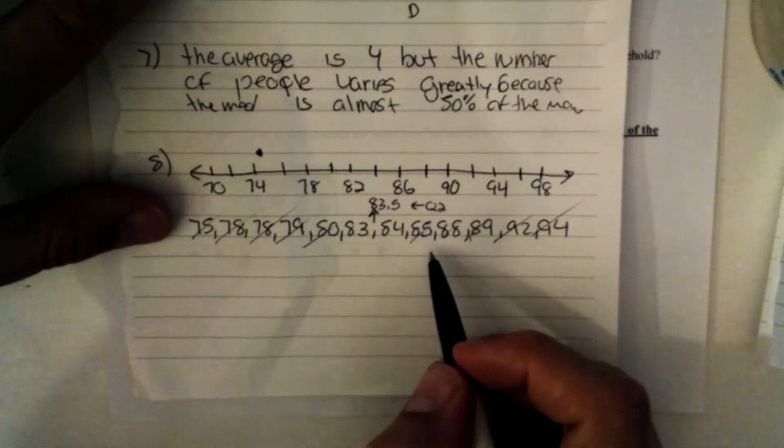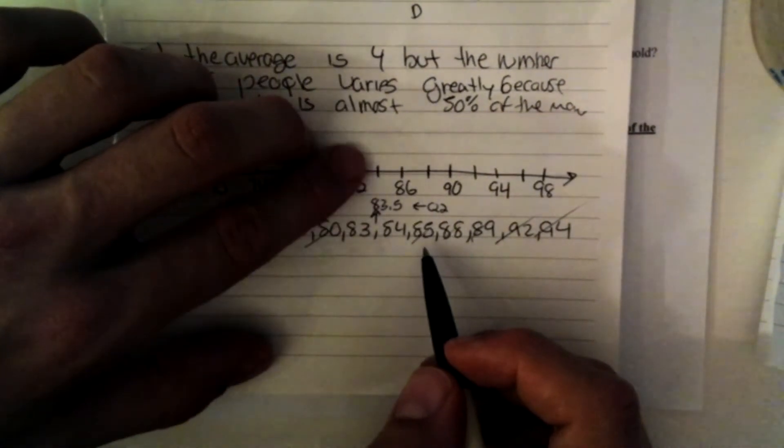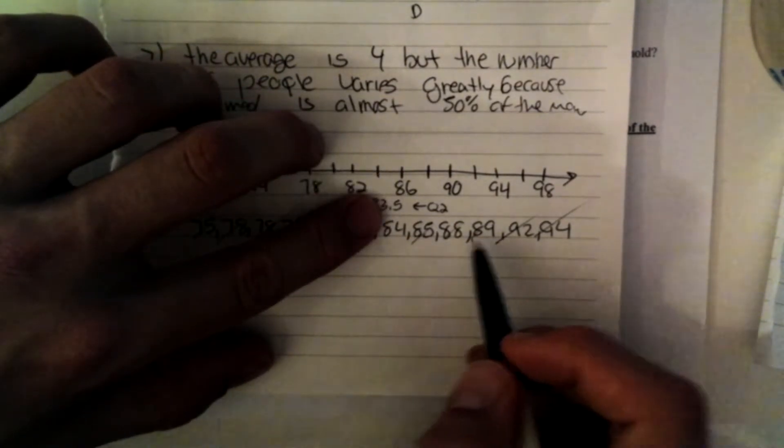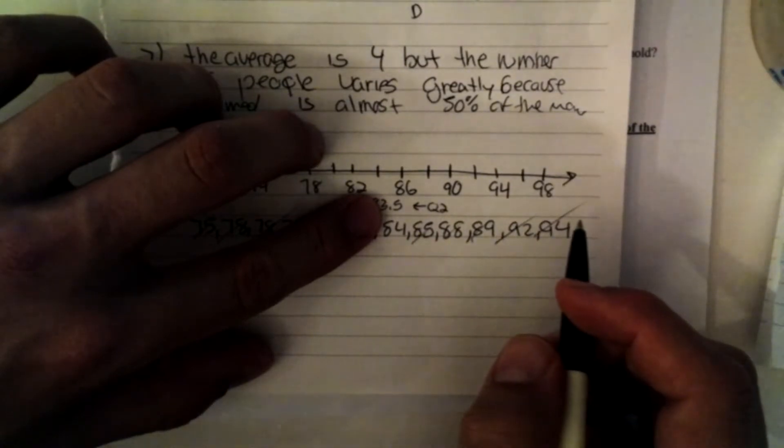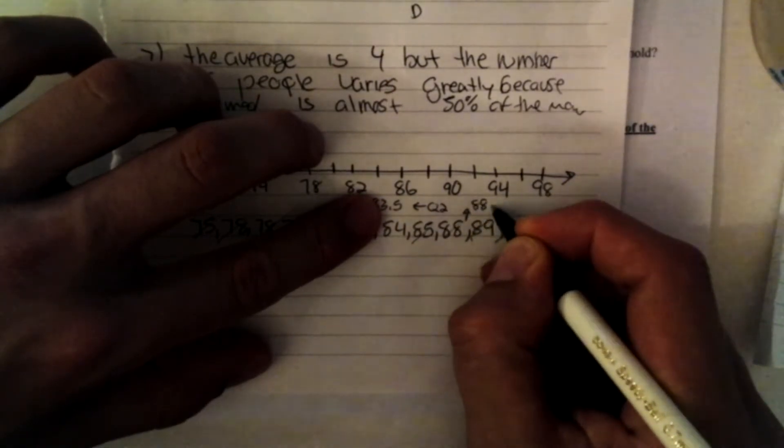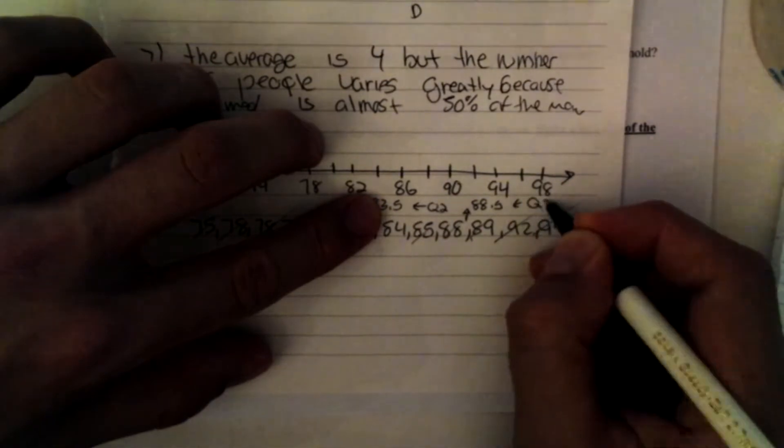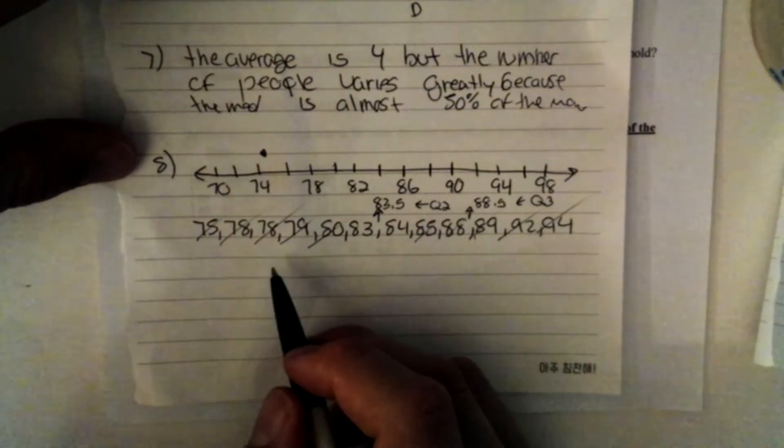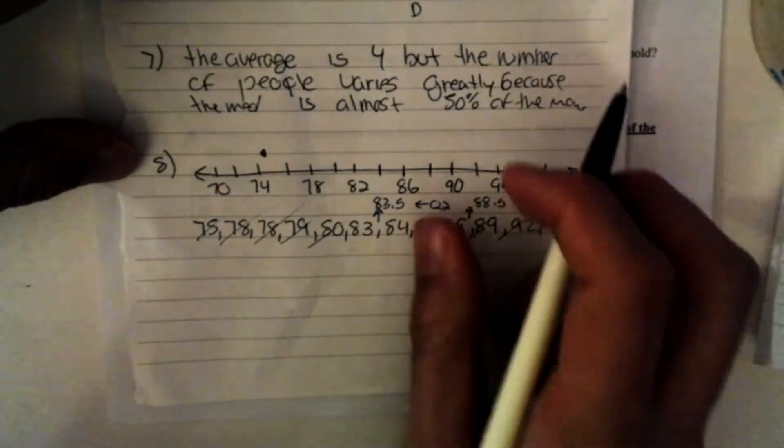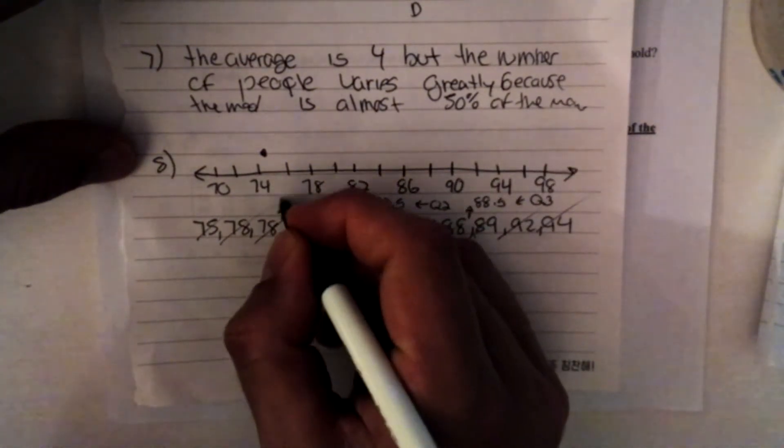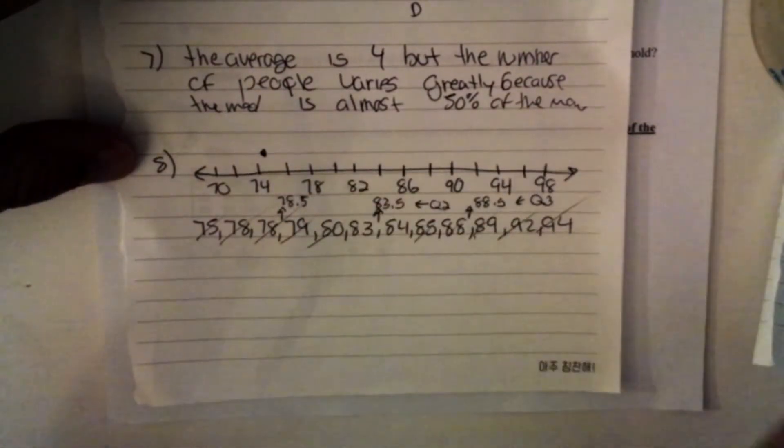Now I have to find the median of the upper half of my data here. We don't want to include the 83.5 in our upper quartile median. So I have 84, 85, 88, 89, 92, and 94. So in between 88 and 89 is 88.5. That'll be my Q3. Now that I've found my Q2 and my Q3, I need to find out what my Q1 is. So I'll do the same thing. I'll cut off six numbers, and in between 78 and 79 is 78.5. So there's my Q1.